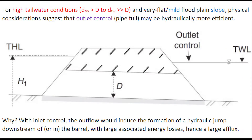For high tailwater conditions — that is, high tailwater depth on a very flat floodplain — physical considerations suggest that outlet control or pipe flow may be hydraulically more efficient.